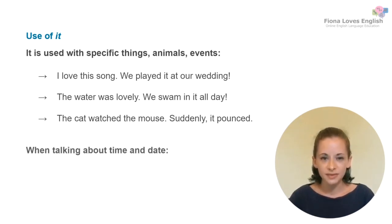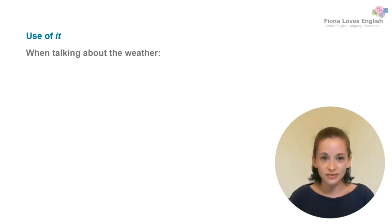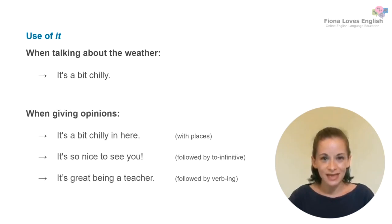We also use the impersonal pronoun when talking about the time and date. I also mentioned before that we can use 'it' to talk about the weather and when giving opinions. For example: 'It's a bit chilly in here' — here you're giving your opinion about a place. 'It's so nice to see you.' And 'It's great being a teacher.'